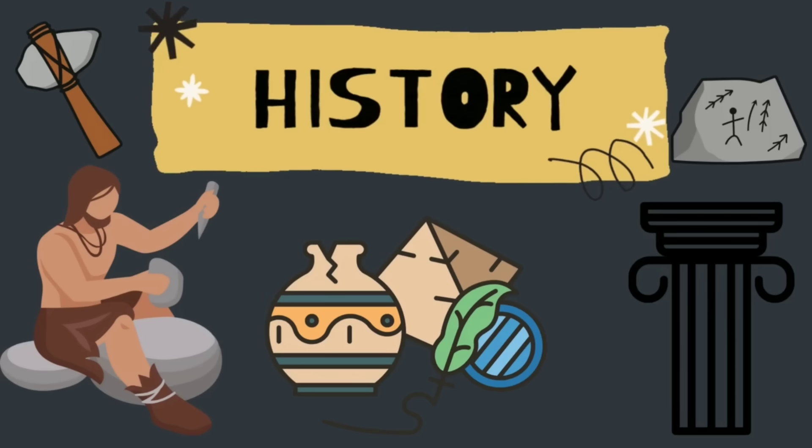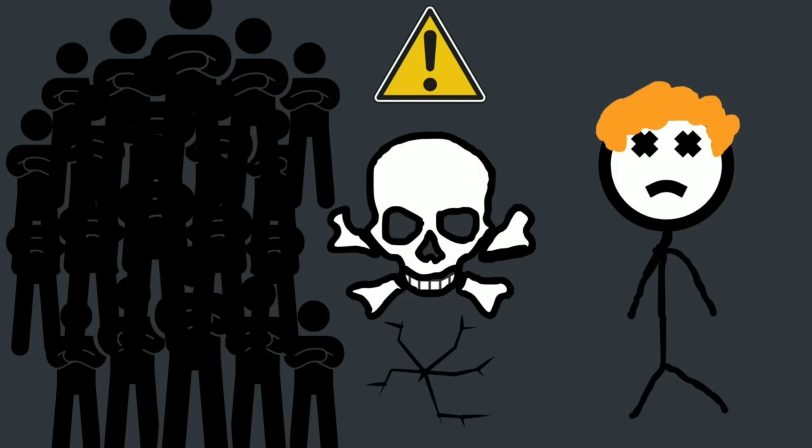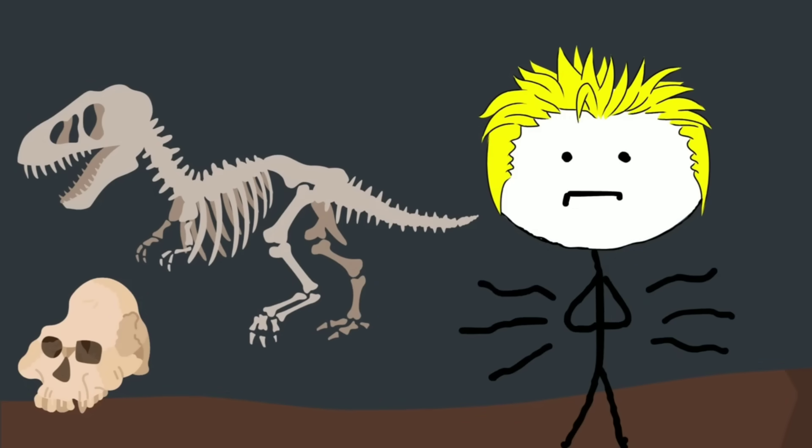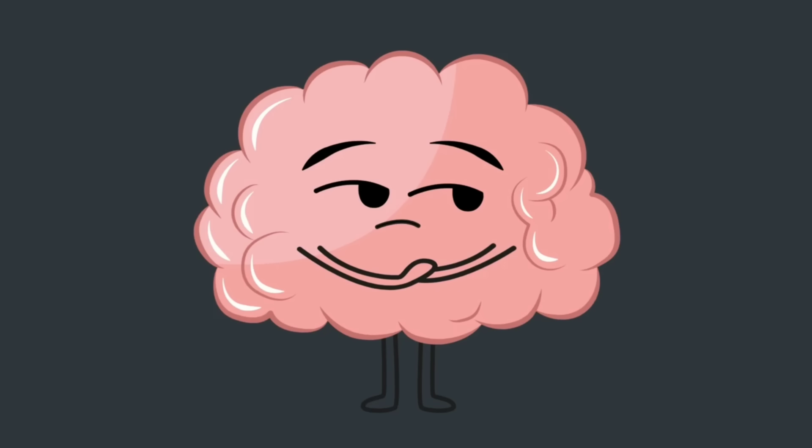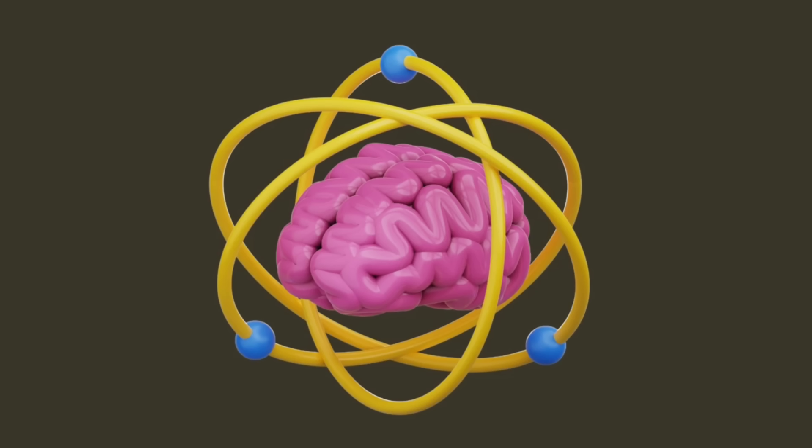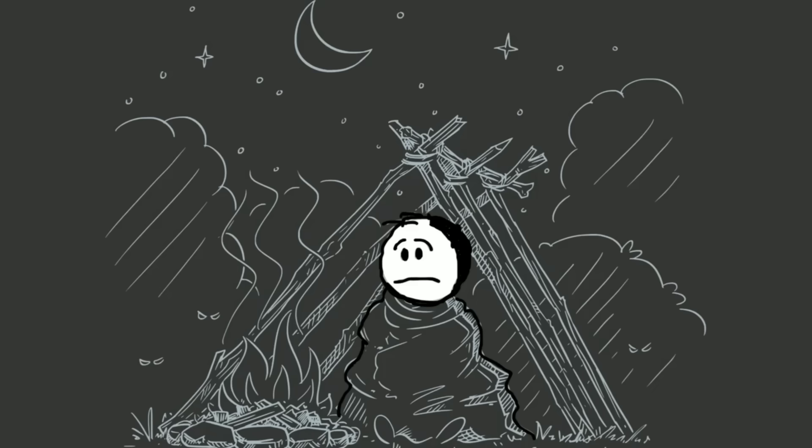Throughout human history, being isolated from the group usually meant one thing: danger. You were more likely to starve, get attacked, or simply not survive. So the brain evolved to see social isolation as a real threat. And when it senses that threat, it activates your survival systems.